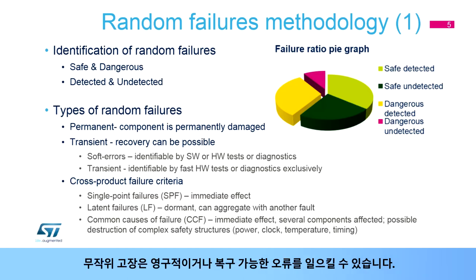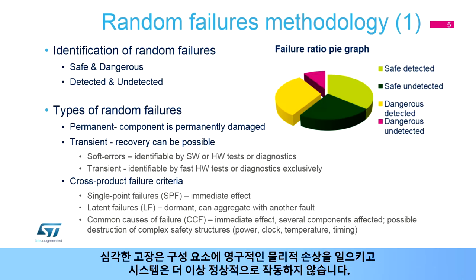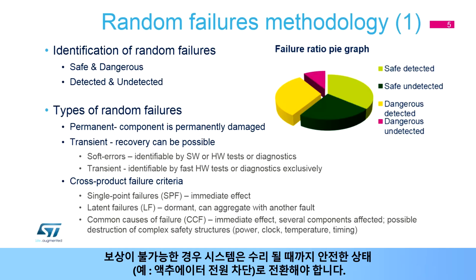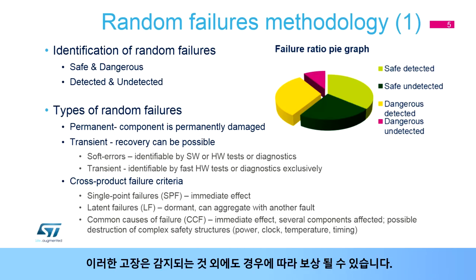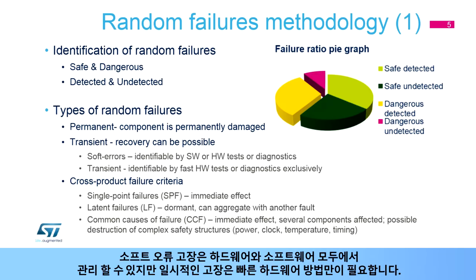Random failures can cause permanent or recoverable errors. Hard failures cause permanent physical damage to the component, and the system is no longer able to operate normally. If no compensation is possible, the system has to be put into a safe state, for example by cutting power to actuators, until it is repaired. Random transient or soft errors can be correctable, and some kind of recovery process can be applicable. In addition to being detected, these failures can also be compensated in certain cases. Soft error failures can be managed by both hardware and software, while transient failures need fast hardware methods exclusively.